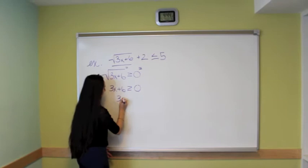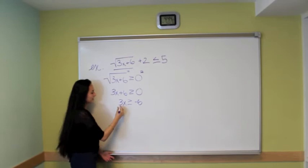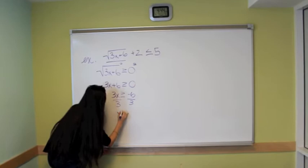We will subtract 6 on both sides. 3x is greater than or equal to negative 6. To isolate the x value, we divide by 3 on both sides. And our first inequality is x is greater than or equal to negative 2.